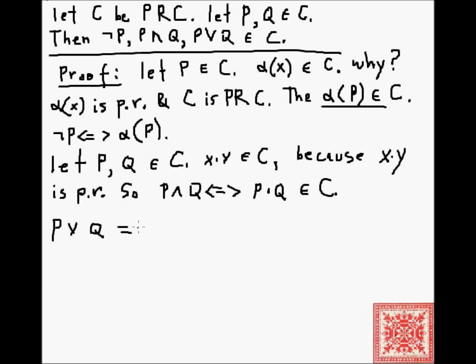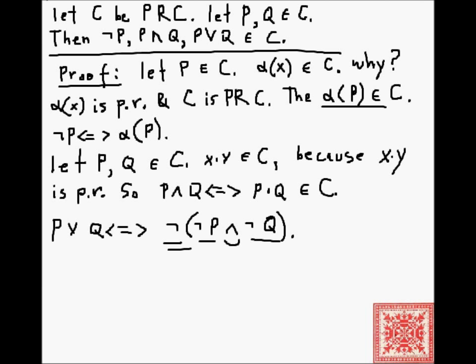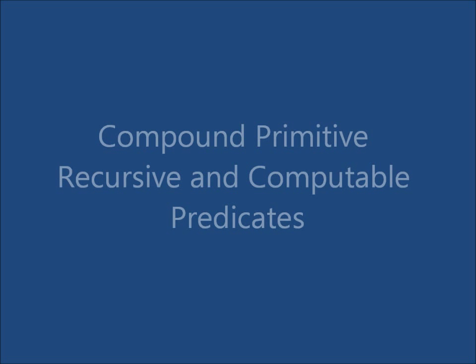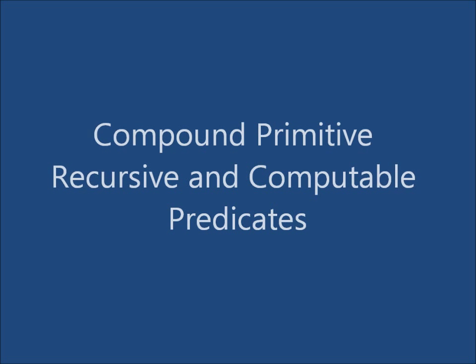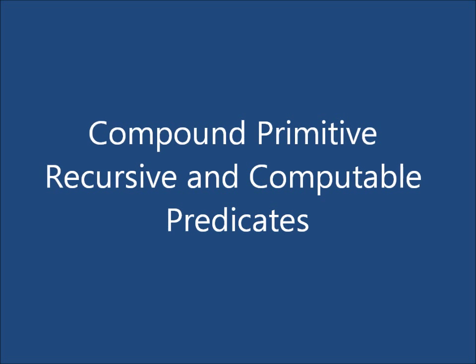For P-or-Q, where P and Q are both in C, that can be defined as not(not-P and not-Q). All of those individual functions — not and and — have been shown to be in C, so their composition is also in C.